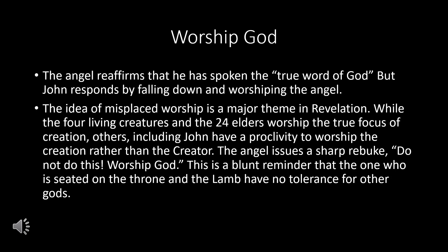The angel reaffirms he has spoken the 'true word of God,' but John responds by falling down and worshiping the angel. You've got to love John, how he puts his own mistakes in there for us to see. The idea of misplaced worship is a major theme in Revelation. While the four living creatures and the 24 elders worship the true focus of creation, others — including John — have a proclivity to worship the creation rather than the creator. The angel issues a sharp rebuke: 'Do not do this. Worship God.' This is a blunt reminder that the one seated on the throne and the Lamb have no tolerance for other gods.